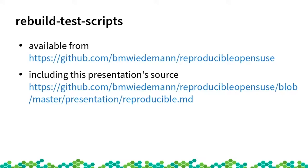I also did some patches to osc and build to make it easier to do this — mostly to pass flags from osc to build to KVM, and telling KVM that it's already 2018 and I want to build this package in 2018. Then I find Java packages that say documentation copyright 2018, which is interesting — but yes, they do that.